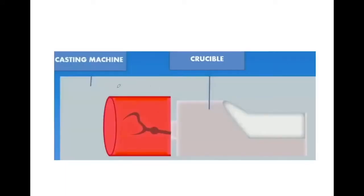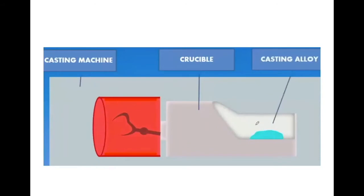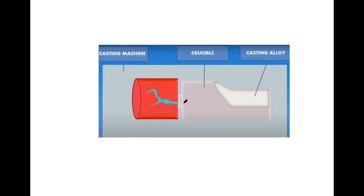This is the casting machine in which we place our mold — it is attached to the crucible. In this crucible, we place the gold alloy, which is the casting alloy. It is heated until it becomes bright orange in color and shiny in appearance. Once this alloy gets heated, we rotate the casting machine and due to centrifugal force, this molten alloy flows into the sprue former and then into the empty mold which is formed by the lost wax technique. You can see this alloy which was present here — when melted with heat, it flows and fills the mold space.